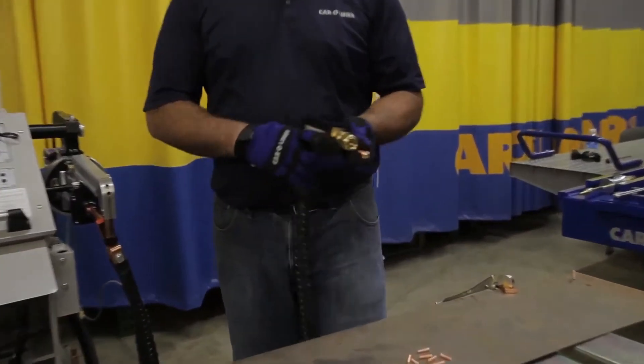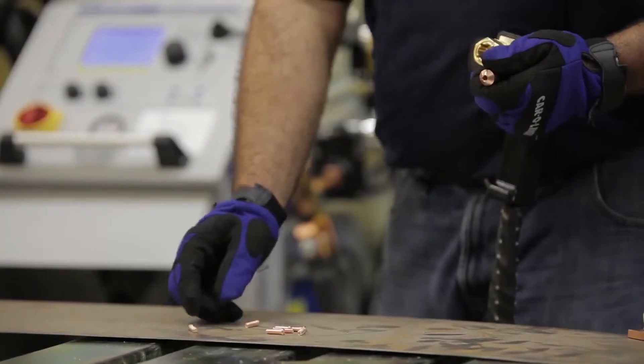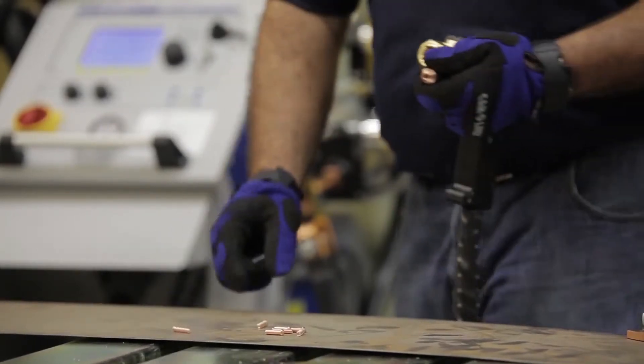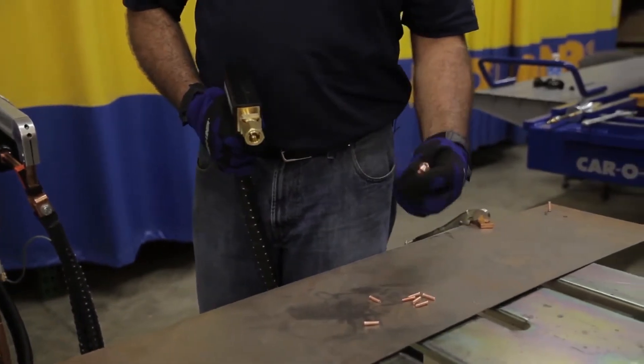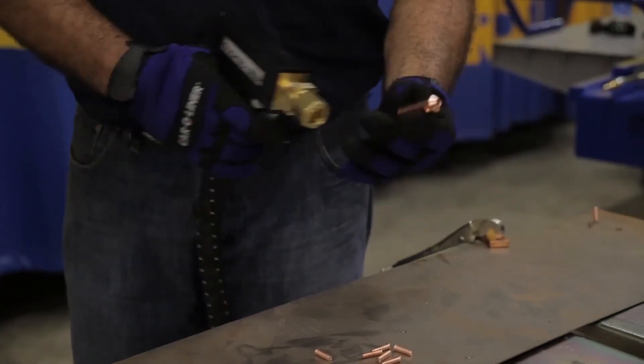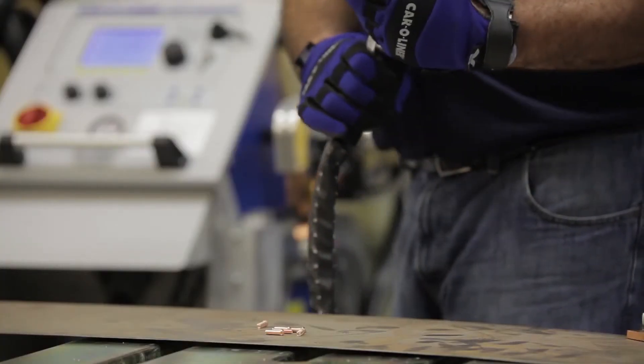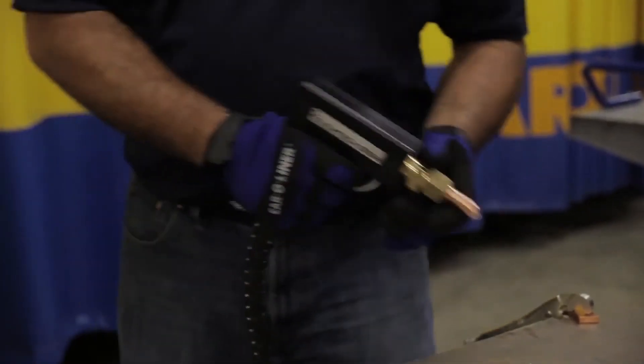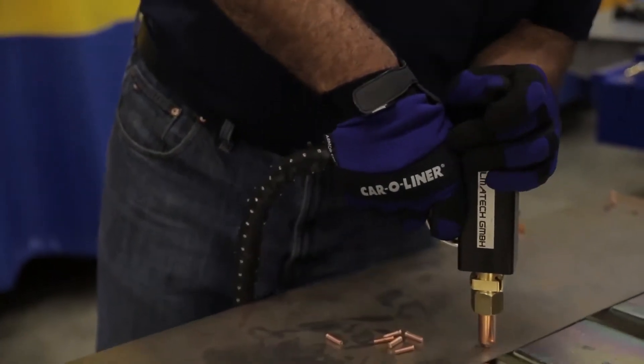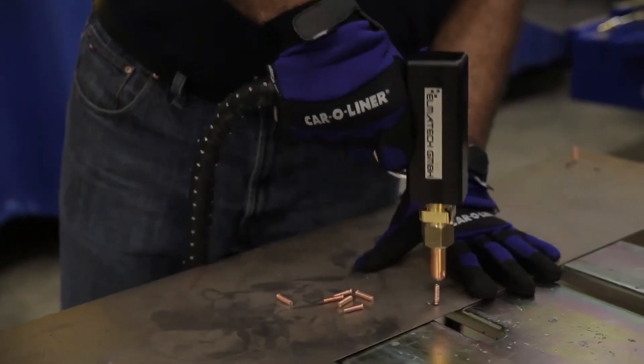So next we're going to go over doing a weld on bolt. So in either a coarse thread or a fine thread depending on the application. Your adapter has two different size holes so pick the one that matches the stud you're working with and we can set that in and tighten it. So again we're going to press firmly and give it a nice weld.